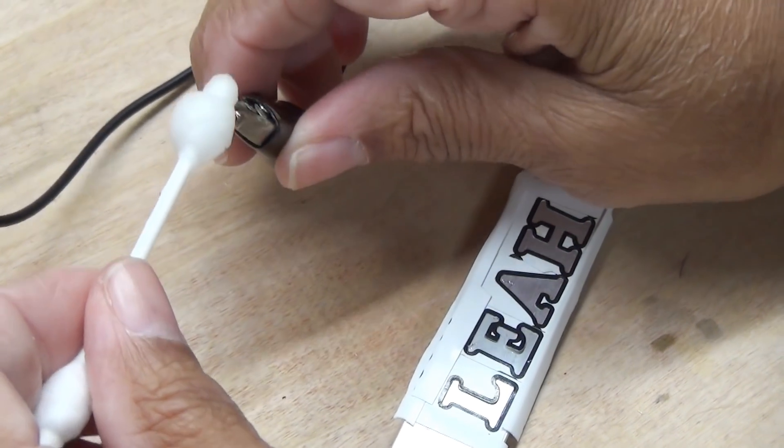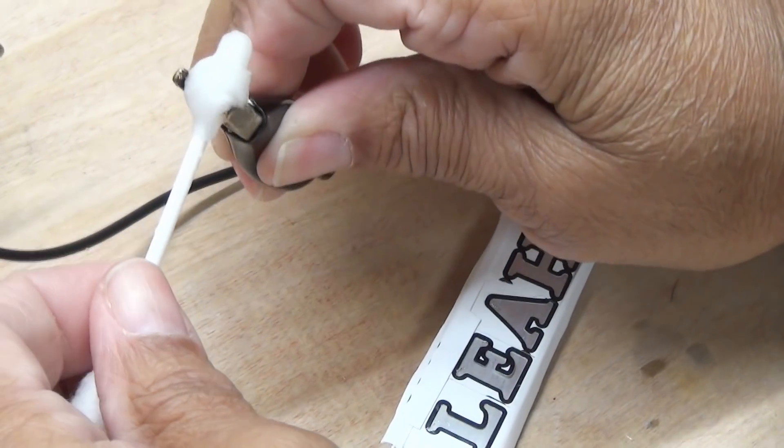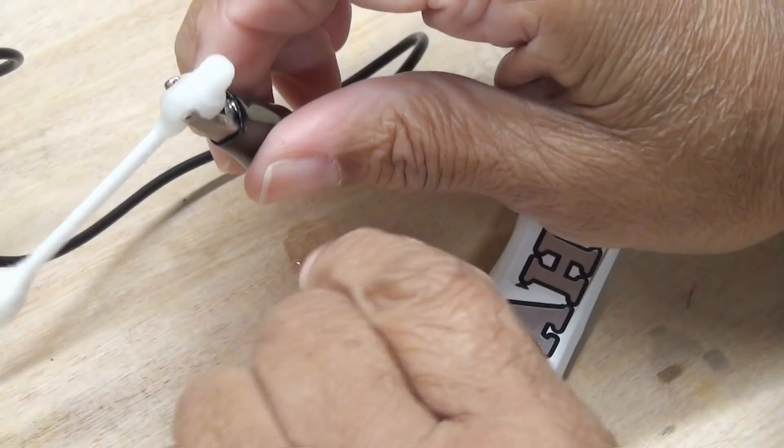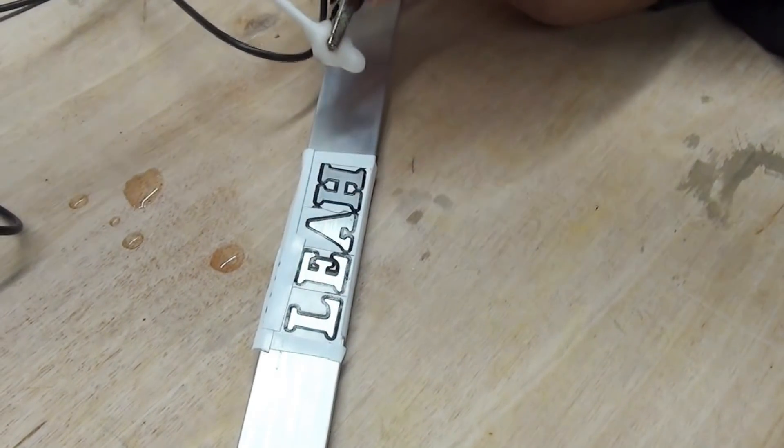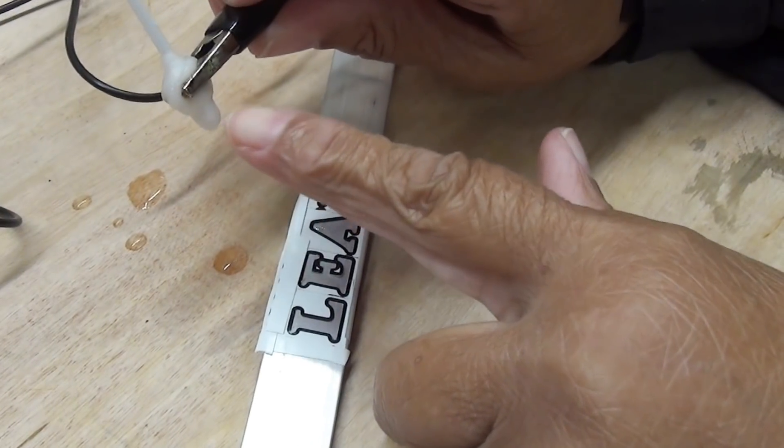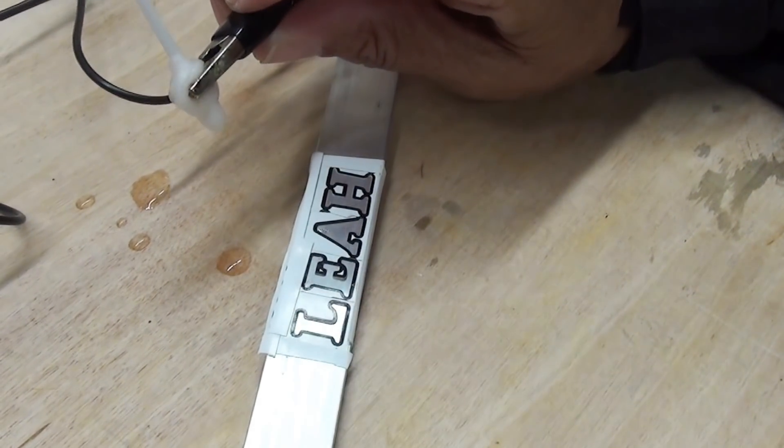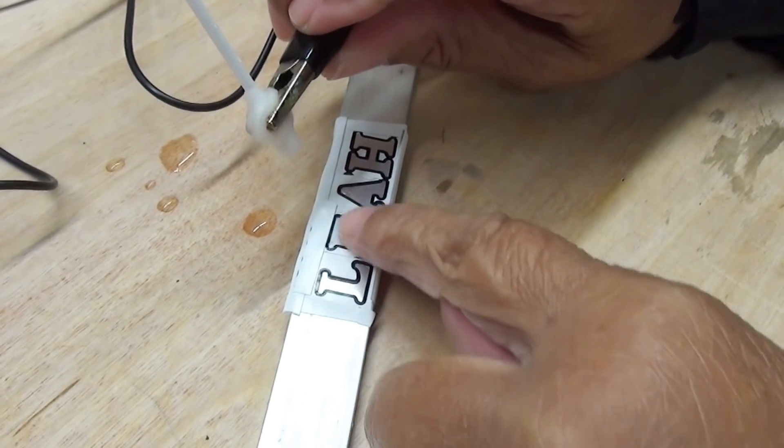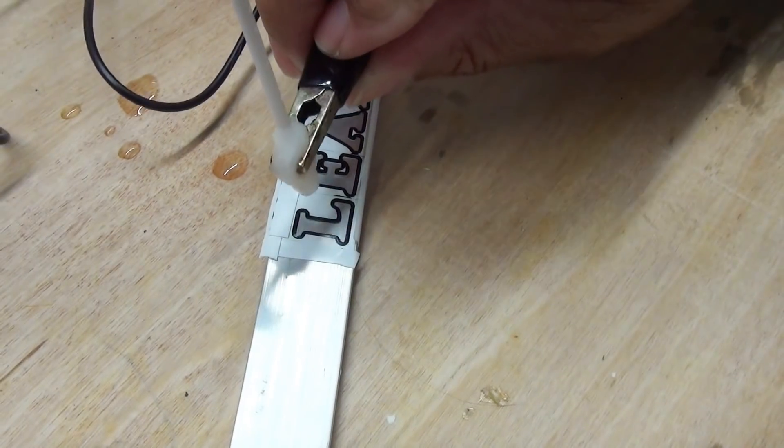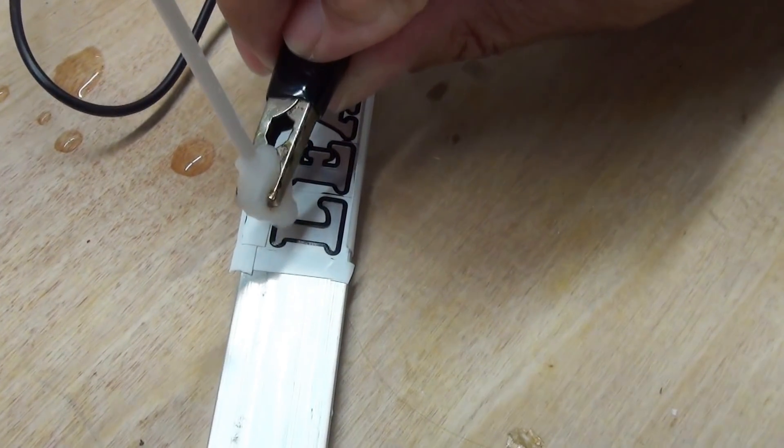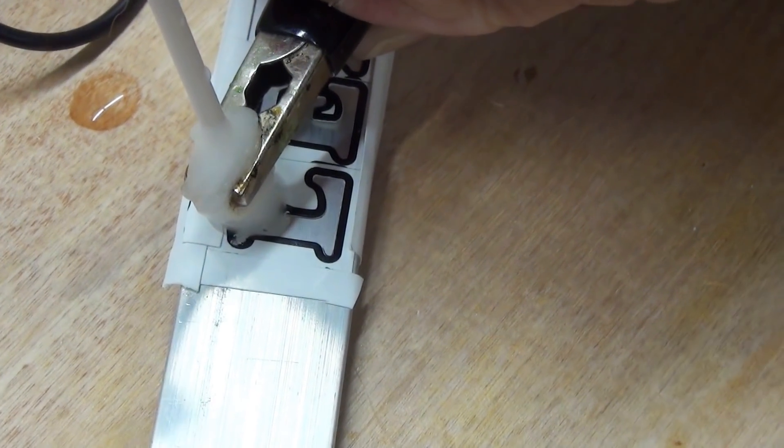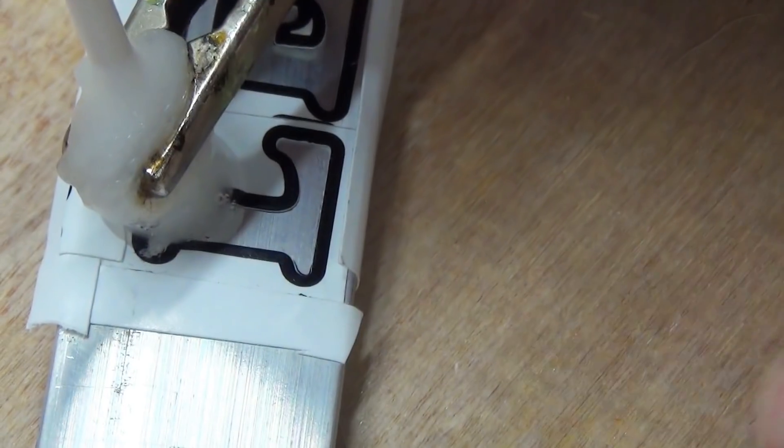Now I'm taking one of the Q-tips that I had submerged in the solution, and I'm clipping my negative alligator clip to it. You want to make certain that you don't get metal-to-metal contact. You just want to come in contact with the Q-tip and the metal. Now we're going to stay inside the lines here. So what you do is you use your Q-tip just like it's a pencil.